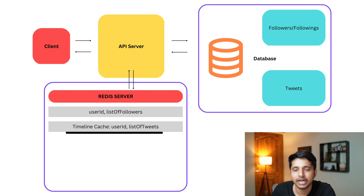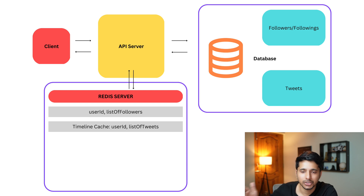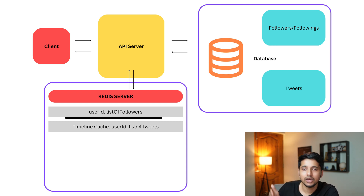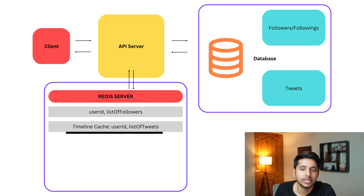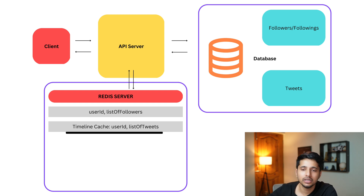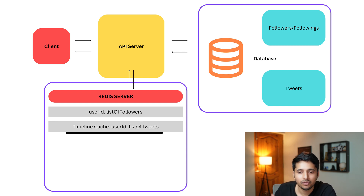How do we create this timeline cache? When any user creates a tweet, we use the first cache to find all that user's followers, and then we insert the tweet into the timeline cache for each of those followers, because those followers should see the tweet. Now when any user requests their home timeline, it is very instant — we just look up the user ID in the timeline cache and return the list of tweets. The user will no longer see a long loading screen because we have solved the high response time problem using Redis cache.